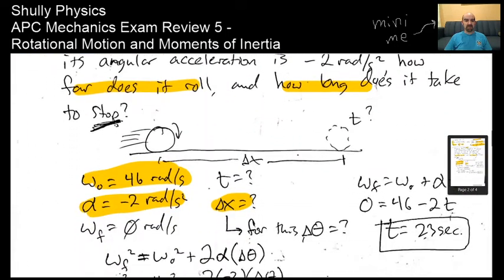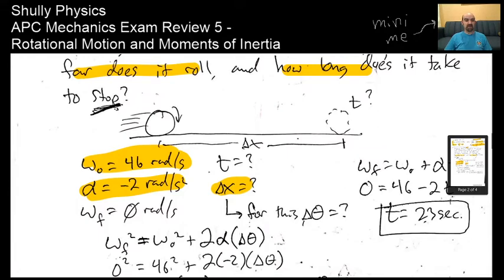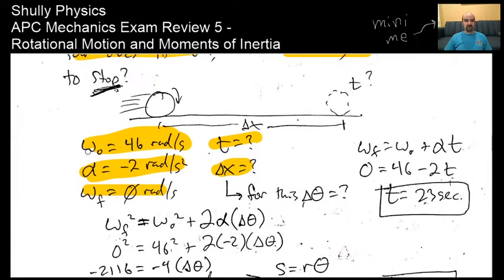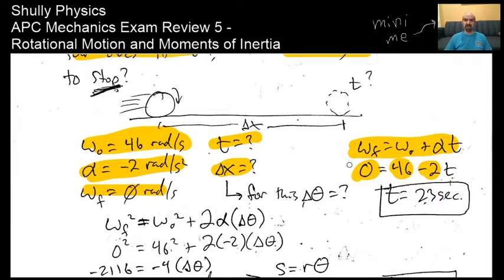How long does it take to slow down from 46 to zero? Final omega is 0, initial is 46, and we're solving for time. Using omega final equals omega initial plus alpha times t: plugging in final of 0, initial of 46, and acceleration of negative 2. If you end up with a negative time, check your signs—you may have put the 46 in the final instead of the initial. We get a time of 23 seconds.